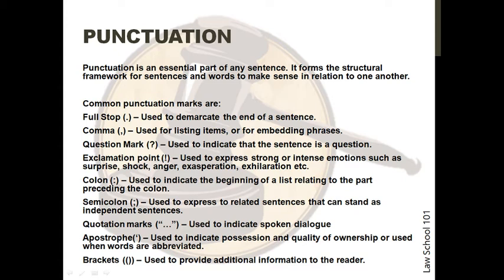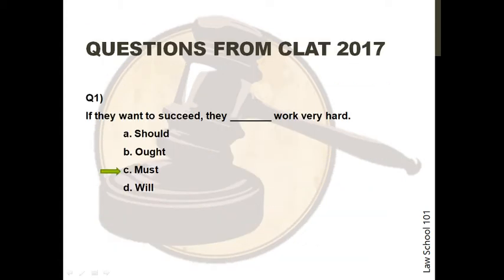Now we will begin discussing questions from the previous year's paper. The first question is from SLAT 2017: 'If they want to succeed, they ___ work very hard.' The correct answer is choice C, which is 'must'. All options would be acceptable except B, whereas 'would' could be correct. However, the most appropriate choice is 'must' because it is a necessity and an absolute certainty that they need to work hard if they want to succeed. This necessity or certainty is best communicated by 'must'.